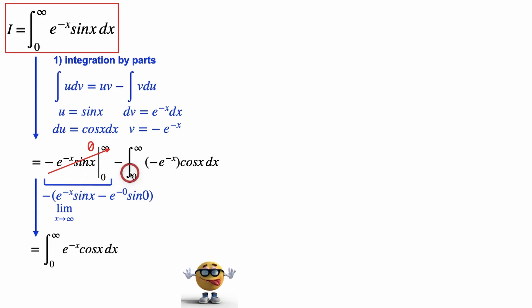So that's cool. So our integral becomes, after canceling these negative signs, e^(-x)cos(x). Now it looks like we didn't do anything. We just exchanged a sin for a cos.